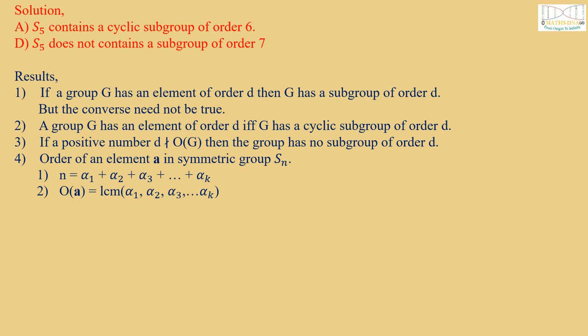And fourth, order of an element a in symmetric group Sn is found as n equals alpha 1 plus alpha 2 plus alpha 3 up to alpha k, and order of a equals the LCM of alpha 1, alpha 2, and alpha k.